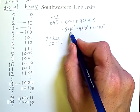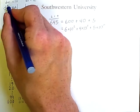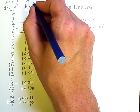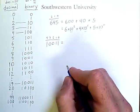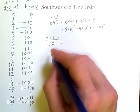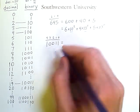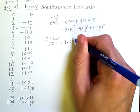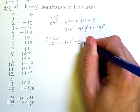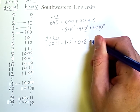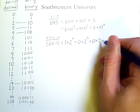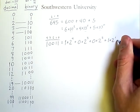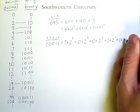So this number is equal to 1 times 2 to the 4th power, plus 0 times 2 to the 3rd, plus 0 times 2 squared, plus 1 times 2 to the 1, plus 1 times 2 to the 0.